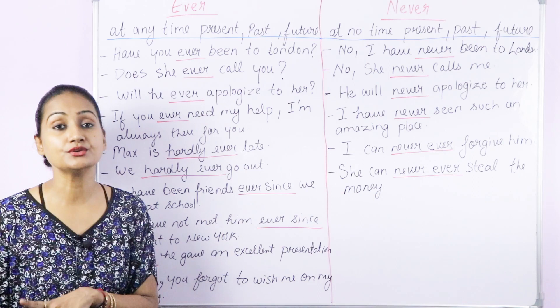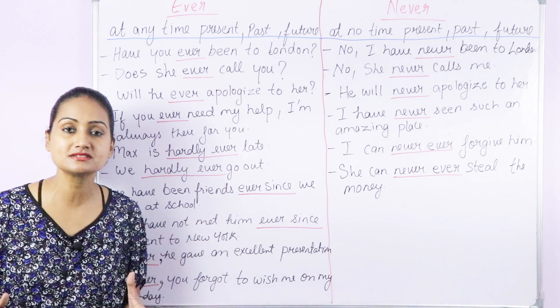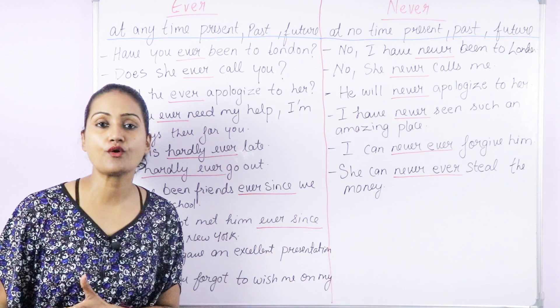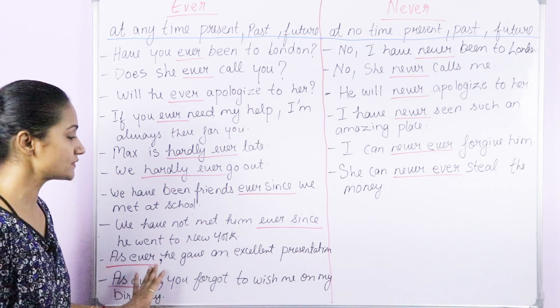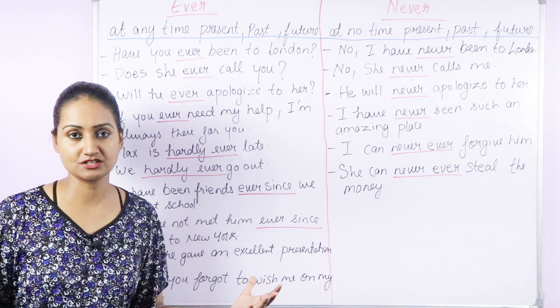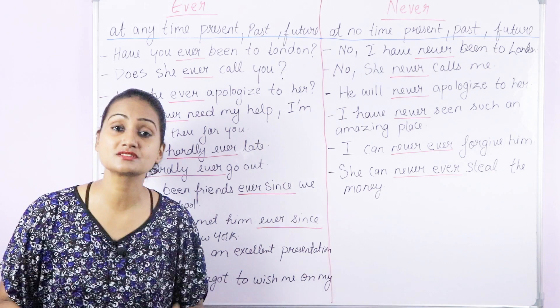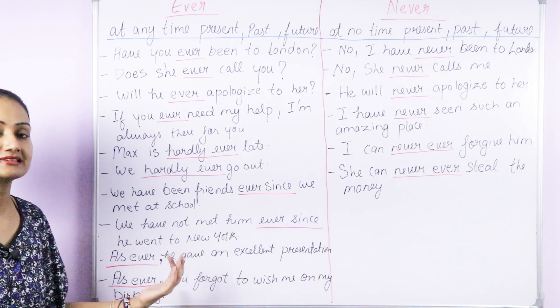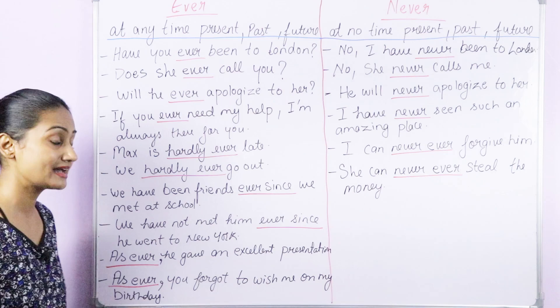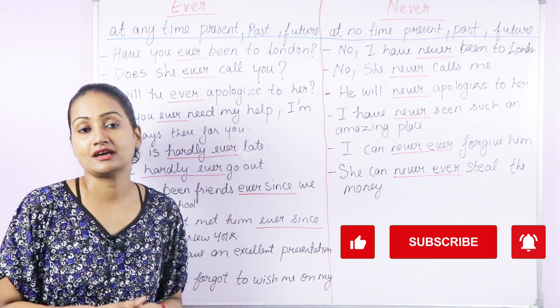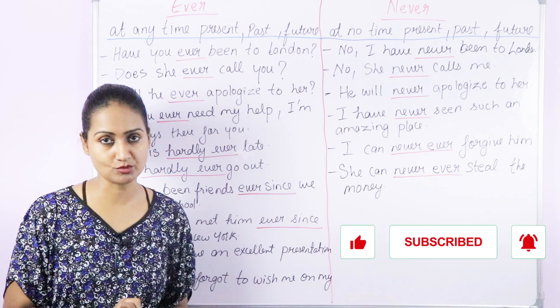Next: 'As ever, he gave an excellent presentation.' Sometimes ever is used in place of always because it has a similar meaning. So you can say 'as always' or 'as ever' — for example: As ever, he gave an excellent presentation because he is good at it and always gives a good presentation. Another example: As ever, you forgot to wish me on my birthday — as always, you always forget my birthday. This is how we use ever in place of always.